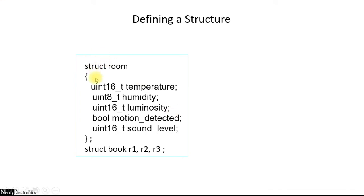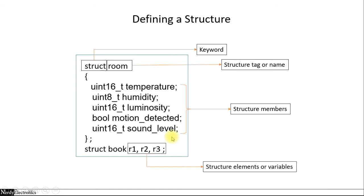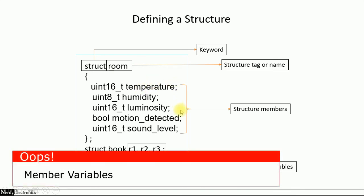To define a structure, we use the keyword struct followed by the name of the structure. In this case we are dealing with a room, so we give it the name 'room'. This is called the structure name or structure tag. The variables declared inside the structure are called structure members — in this case, uint16 temperature, uint8 humidity, and so on. Then we have structure variables: R1, R2, R3 are variables of structure type room.